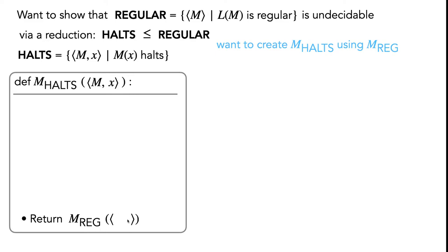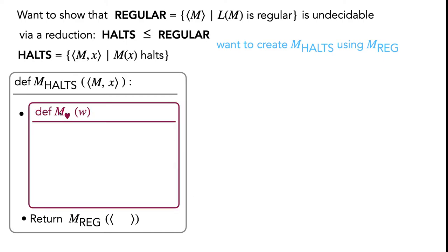We still have to give mReg an input. Looking at the type of the language REGULAR, we know its input is going to be the encoding of another Turing machine. The only Turing machine encoding we have access to so far is our input machine m. If we pass that in, we could tell whether the language of m is regular, but that doesn't answer whether m on x actually halts. So this gives us a clue that we're probably going to want to define our own Turing machine to pass into mReg.